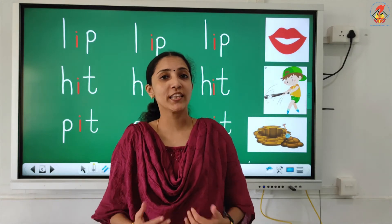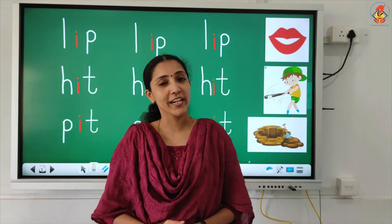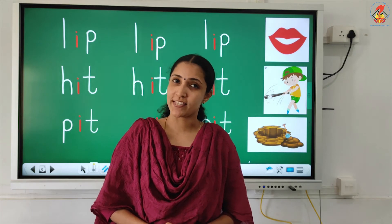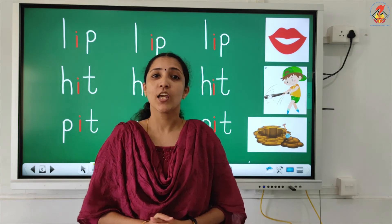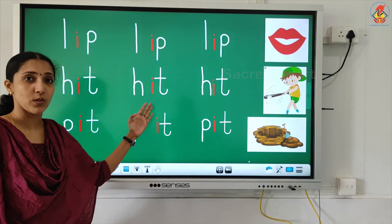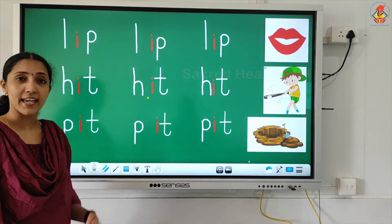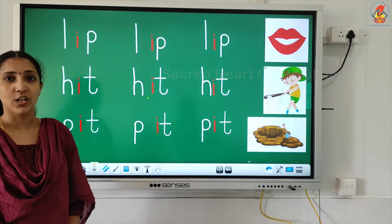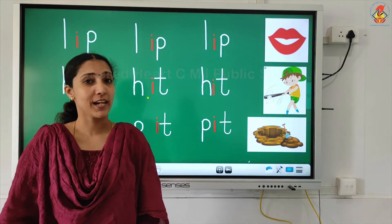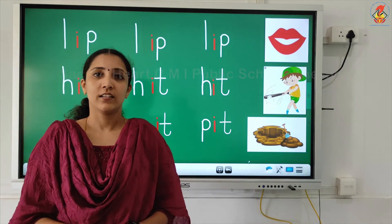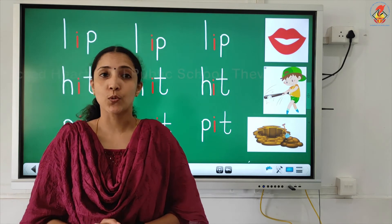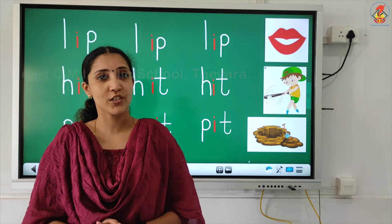Dear parents, all these words are three-letter words which follow the pattern consonant-vowel-consonant. You can see that all the above CVC words have the short vowel i at the center. So these words are the family words of short vowel i. Please make your child practice the words using phonic sounds of each letter.